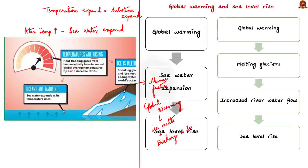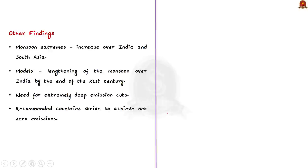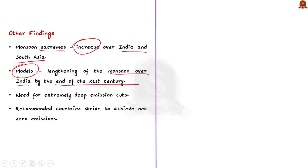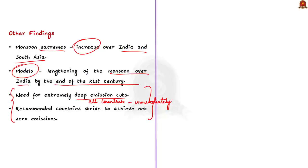Apart from these findings, monsoon extremes are apparently going to increase over India and South Asia, and models indicate a lengthening of the monsoon over India by the end of the 21st century. To conclude, the report reminds us that unless extremely deep emission cuts are undertaken by all countries immediately, the Paris goals are unlikely to be met. The report recommended that countries should strive to achieve net zero emissions — no additional greenhouse gases emitted — by 2050.